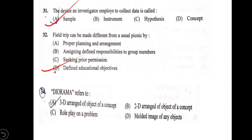Question 34: diorama refers to — option A: 3D arrangement of objects of a concept; B: role play on a problem; C: 2D arrangement; D: model image. Diorama refers to a 3D arrangement of objects of a concept. Option A is correct.